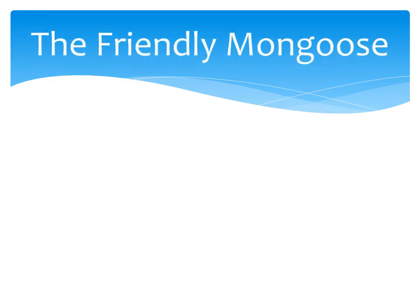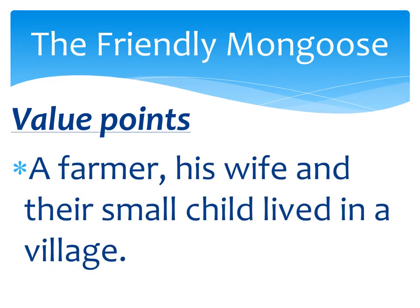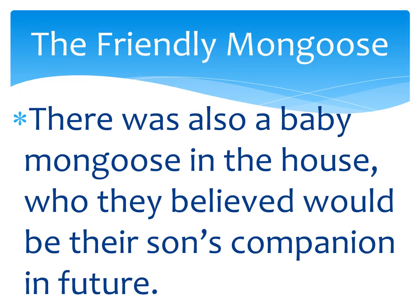The Friendly Mongoose — first of all we are going to revise Lesson 2 of A Pact with the Sun through value points. There was a farmer, his wife, and their small child who lived in a village. There was also a baby mongoose in the house, who they believed would be their son's companion in future. The farmer brought the mongoose into the house, thinking it would be the best friend of their son.